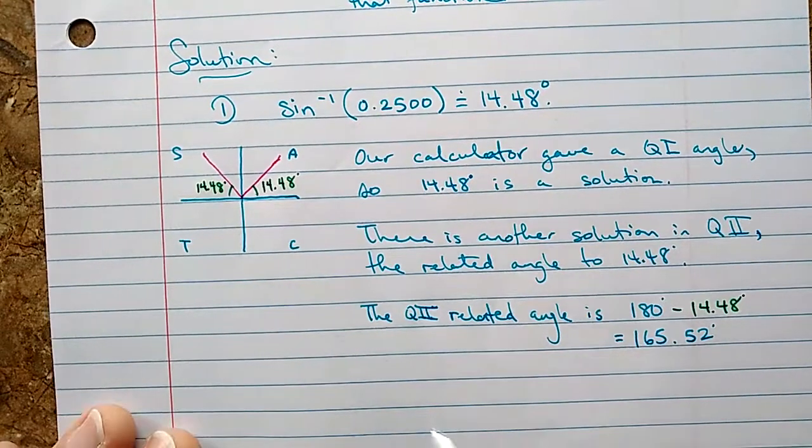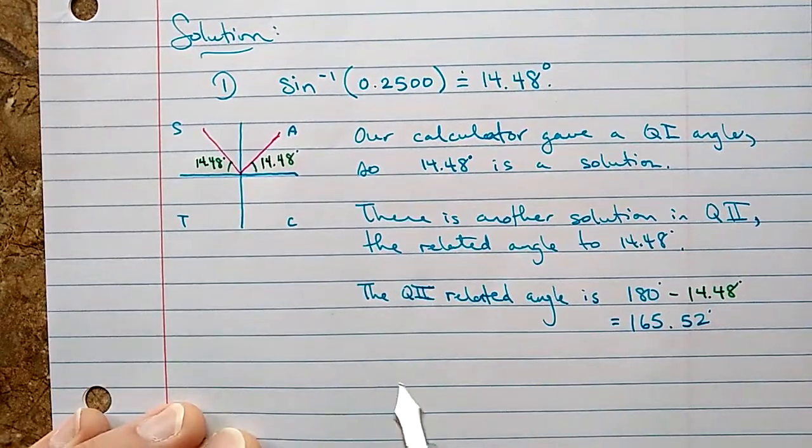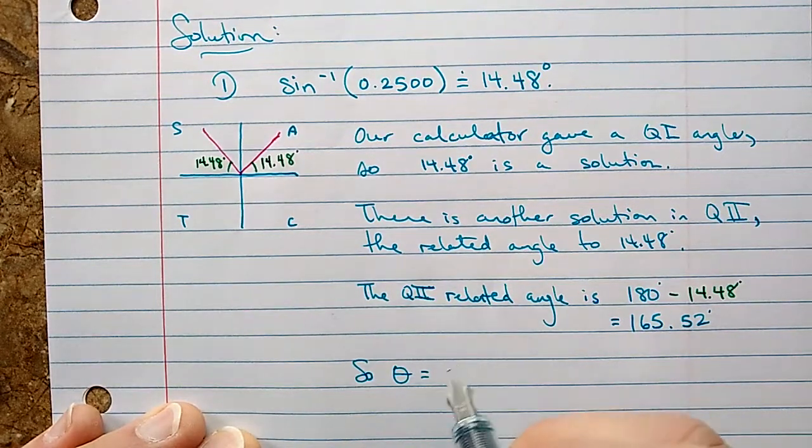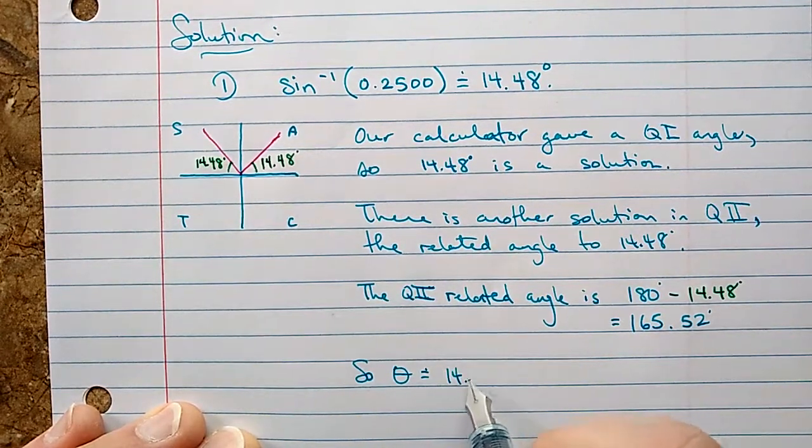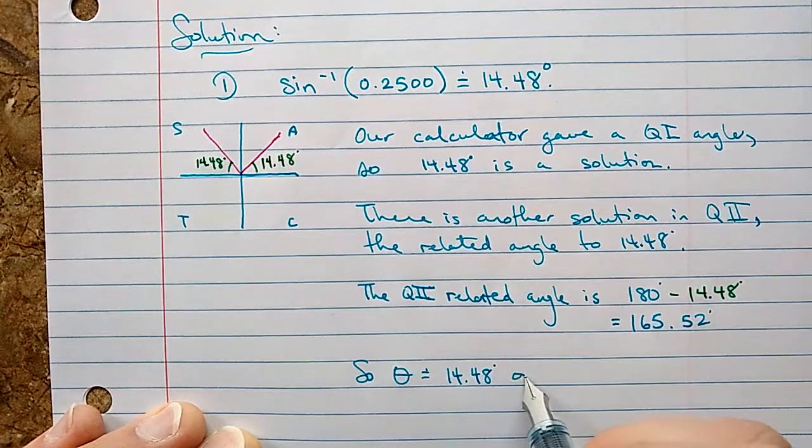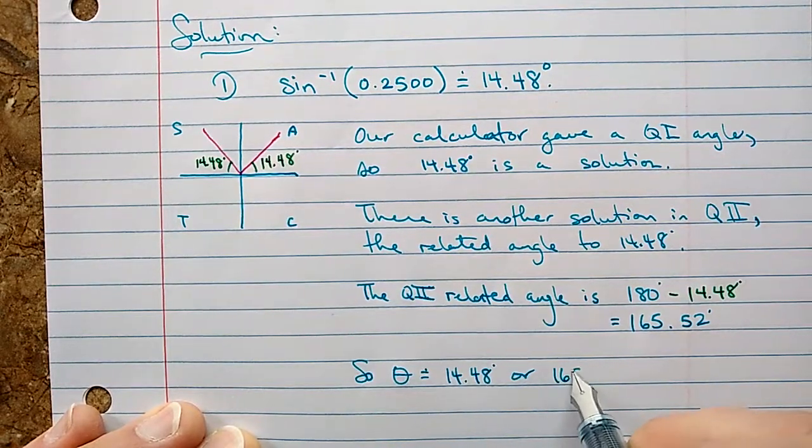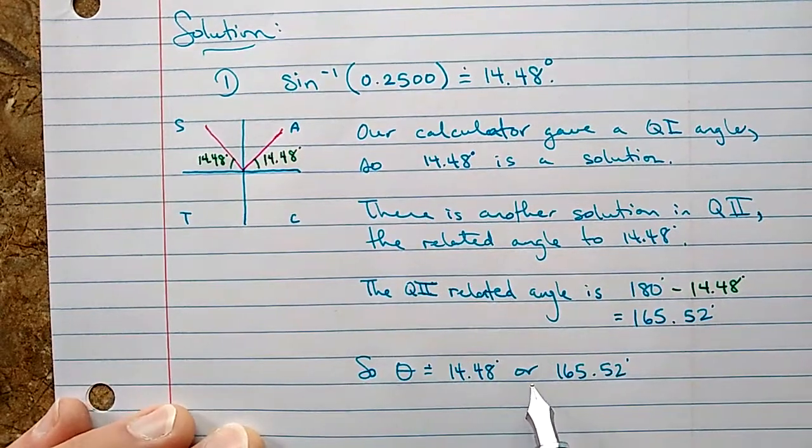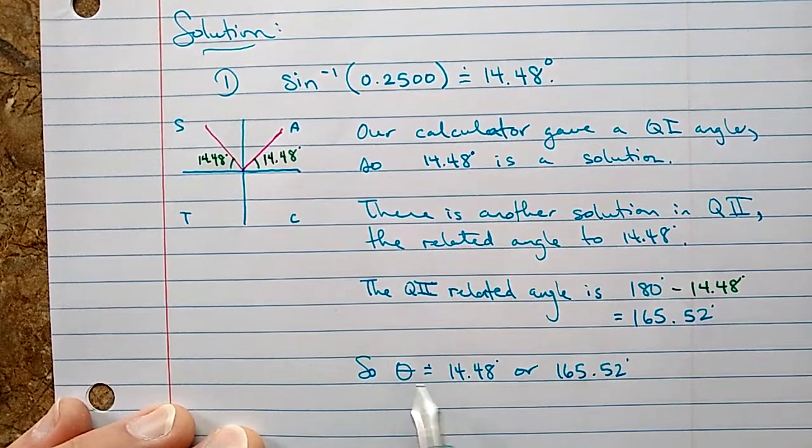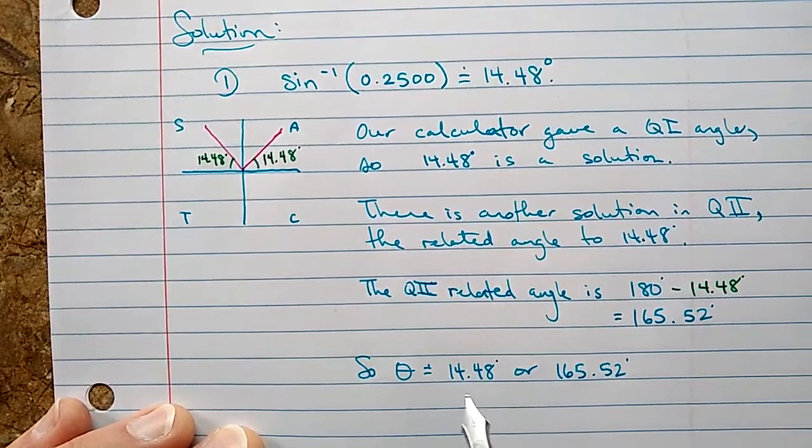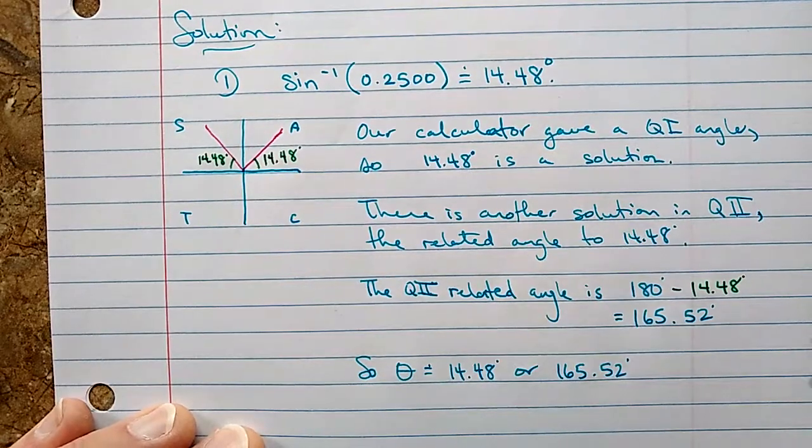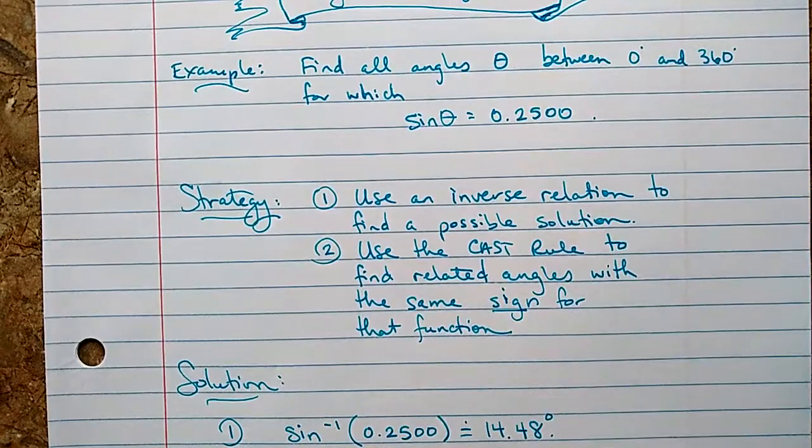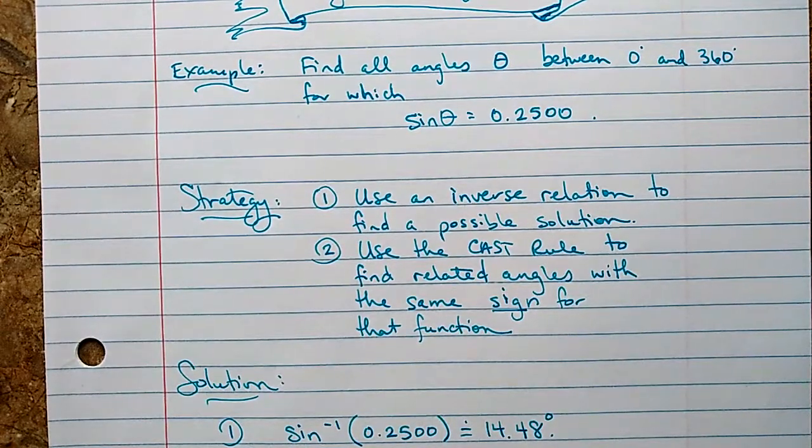So those are the two solutions. Theta is approximately 14.48 degrees or 165.52 degrees. We use the word or because we can't say both of these are theta, but theta can be this number or it can be this number in order to satisfy that equation. So hey, we finished one already. Let's try another one.